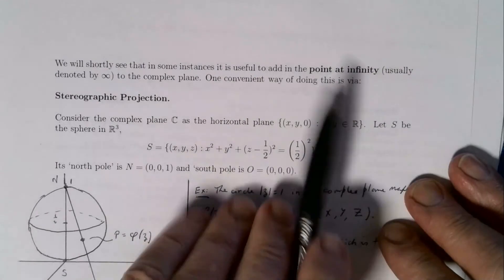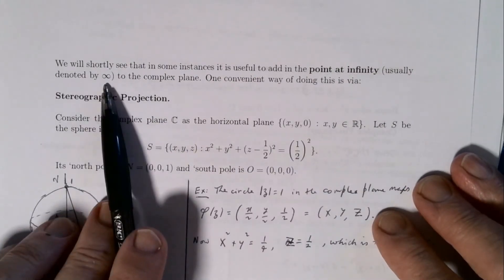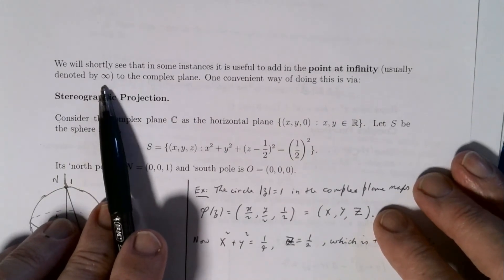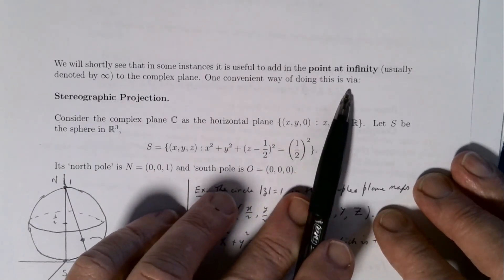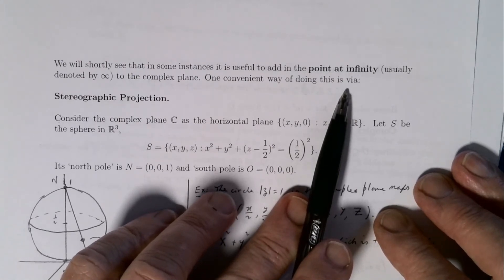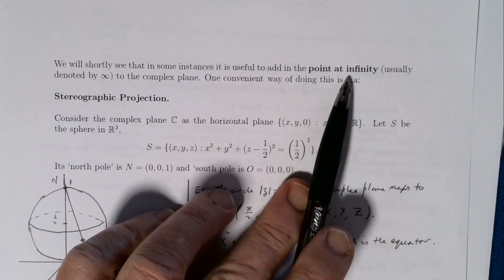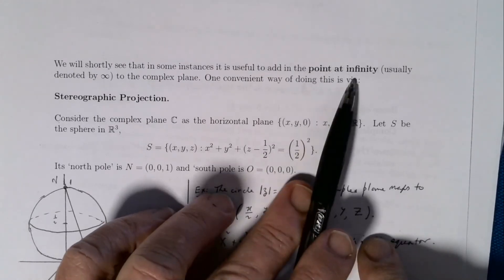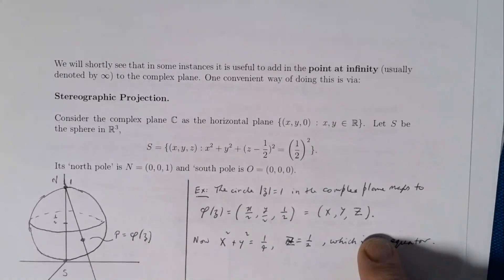We will shortly see that in some instances it is useful to add what we call a point at infinity, usually denoted ∞, to the complex plane. By the way, in the complex plane there is only one point at infinity — we don't have a +∞ and a −∞ that are somehow different. There is only one point at infinity, as we will see when we look at stereographic projection.